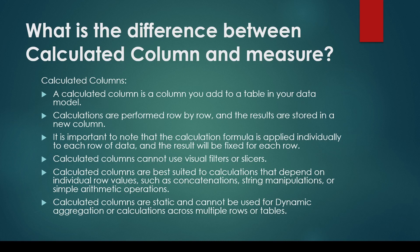In the table, the result is not changing - in the visualization, filter response can change. Calculated columns cannot use visual filters or slicers, meaning it's not going to change the calculation here in the row. Calculated columns are best suited for calculations that depend on individual row values, such as concatenation, string manipulation, or simple arithmetic operations. Calculated columns are static and cannot be used for dynamic aggregation or calculation across multiple rows or tables - dynamic in terms of slicer value in the visual, not in the table row.